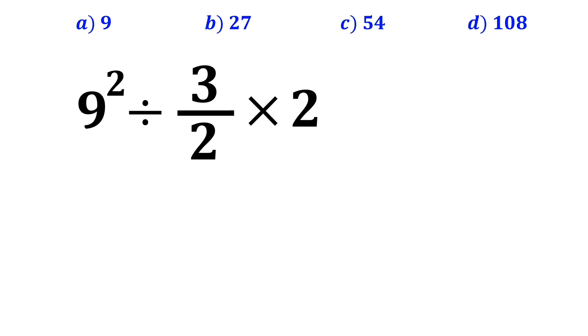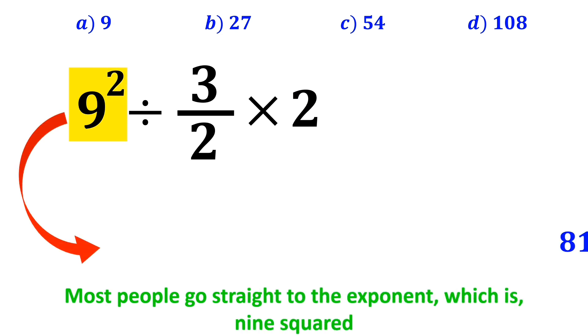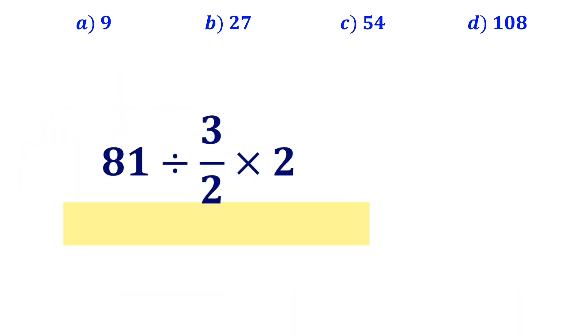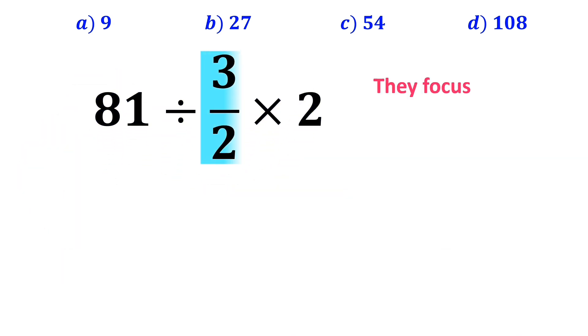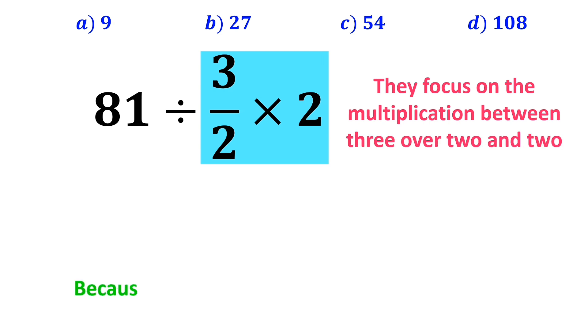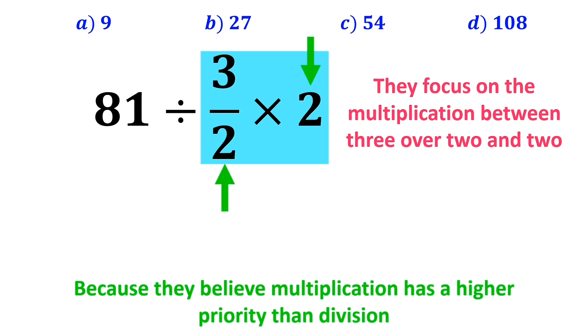And the first step to solve this question, most people go straight to the exponent which is 9 squared, and rewrite this expression as 81 divided by 3 over 2 multiplied by 2. In the next step, they focus on the multiplication between 3 over 2 and 2, because they believe multiplication has a higher priority than division. As you can see in the image, they simply cancel out the 2s, and this expression simplifies to 81 divided by 3, which finally gives them the answer 27.